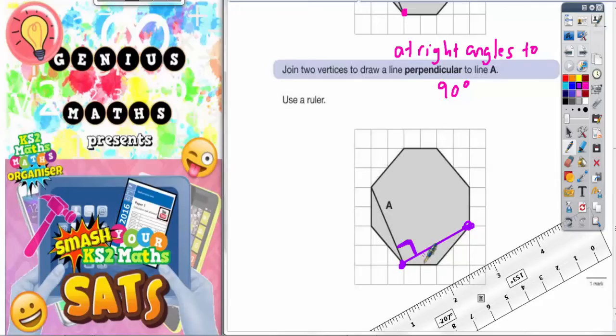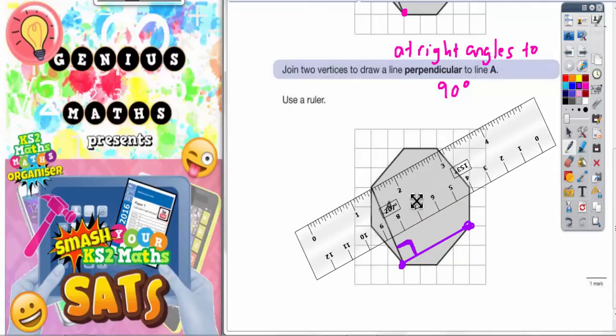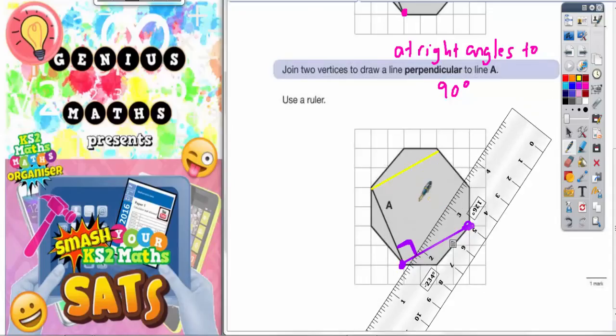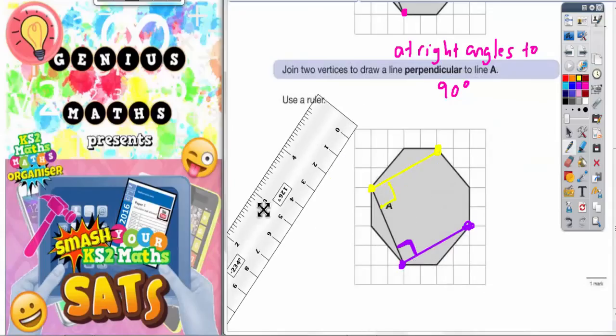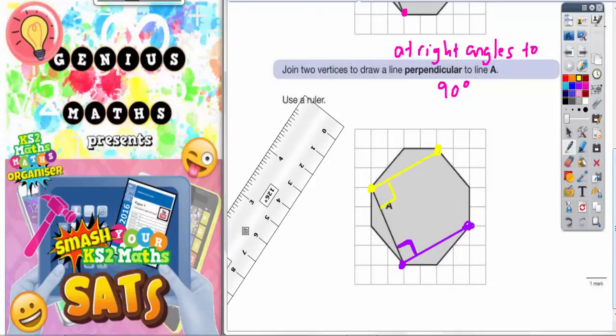And we've made a right angle with line A. The other possible answer which we'll use a different colour for is to go at the top here and join those two corners. And again if you join those two corners you'll make a right angle with line A. So there's two possible answers for the second part of the question.